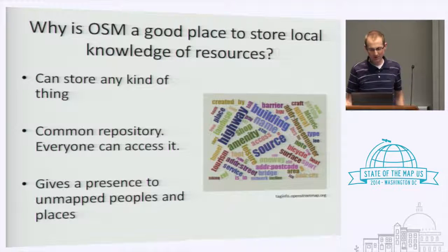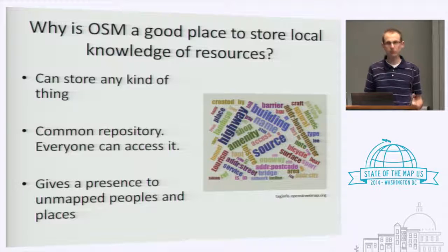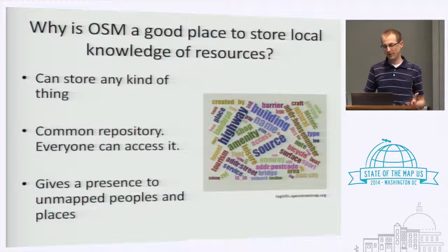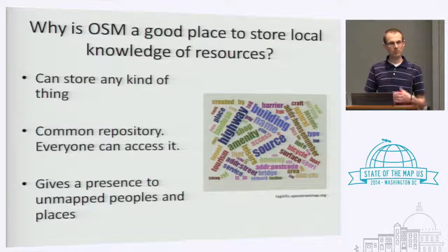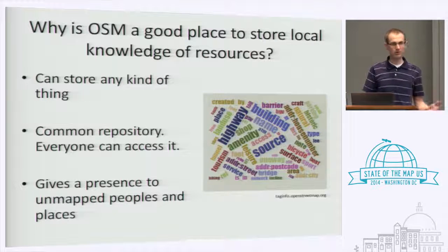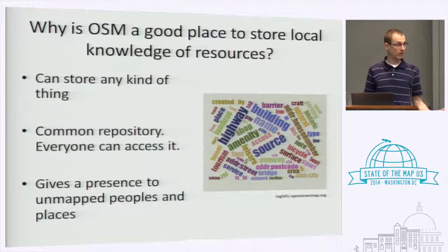Why does OpenStreetMap make a good place to store this local knowledge? First of all, it's flexible. Because of its tagging structure where you can propose tags, the community votes on them, and even if you don't get the votes you need right away, you can start using it as an example implementation — you can really store any kind of thing. It's also common: anybody can put data in, anybody can get the data out, with no restrictions on access or use. And finally, it has the potential for anybody to take action — they have the agency to put their place on the map, even if it's been unmapped, under-mapped, or neglected by other types of maps.